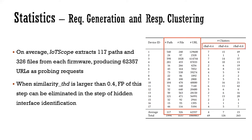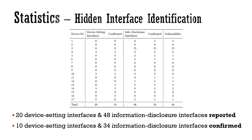We set different similarity thresholds in clustering. The larger the threshold, the more clusters produced, which produces false positives. As we tested, when the threshold is larger than 0.4, false positives of this step can be eliminated in the step of hidden interface identification. 20 device setting interfaces and 48 information disclosure interfaces were reported by the tool. In the end, we manually confirmed 10 device setting interfaces and 34 information disclosure interfaces.